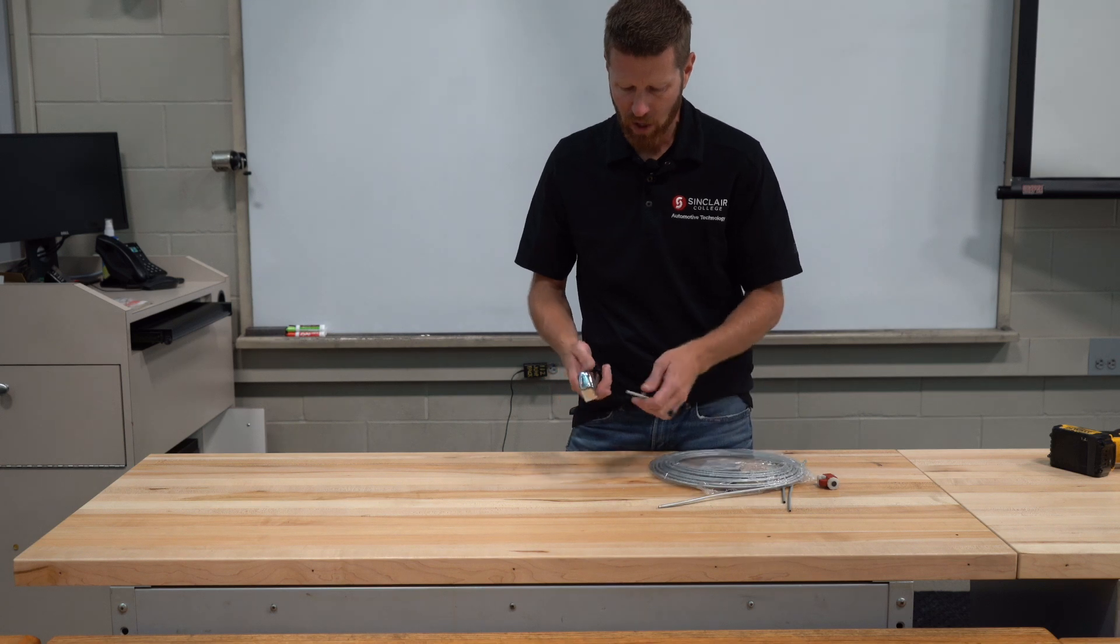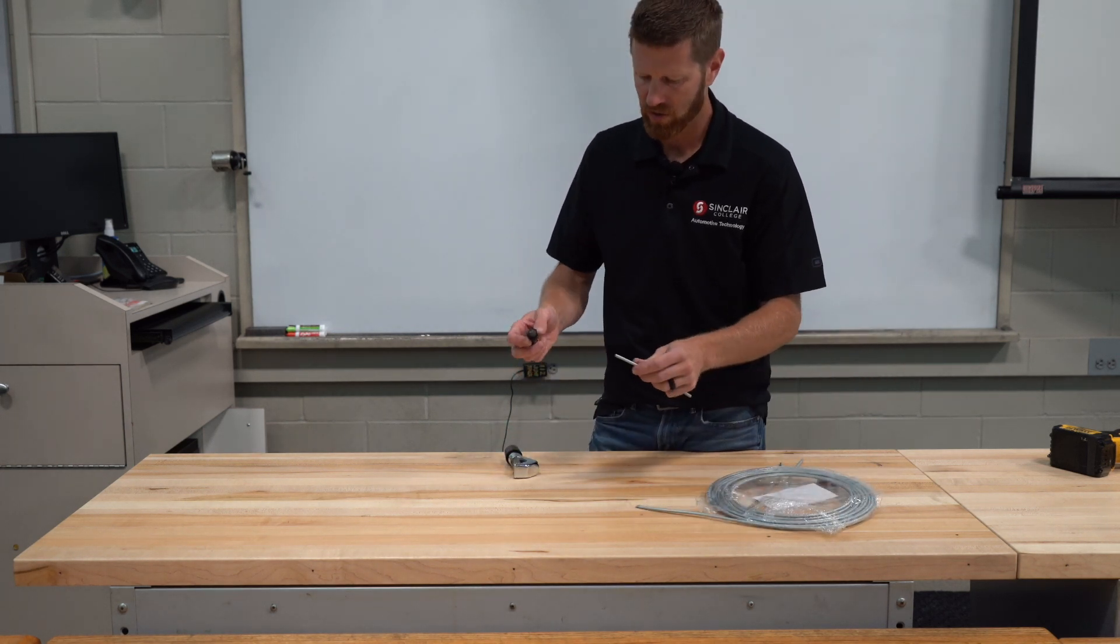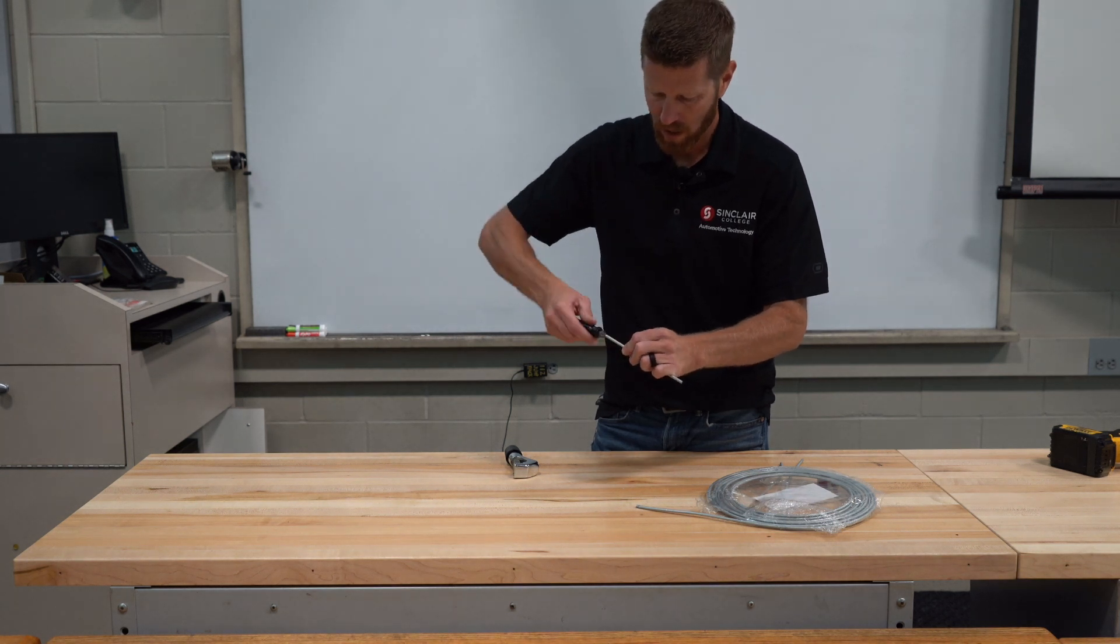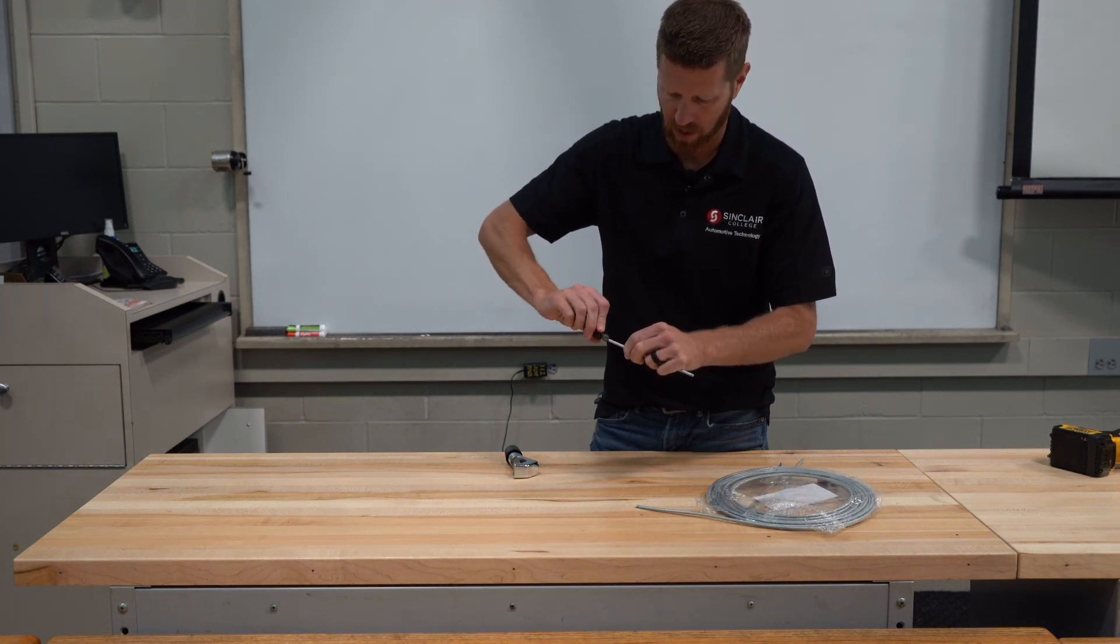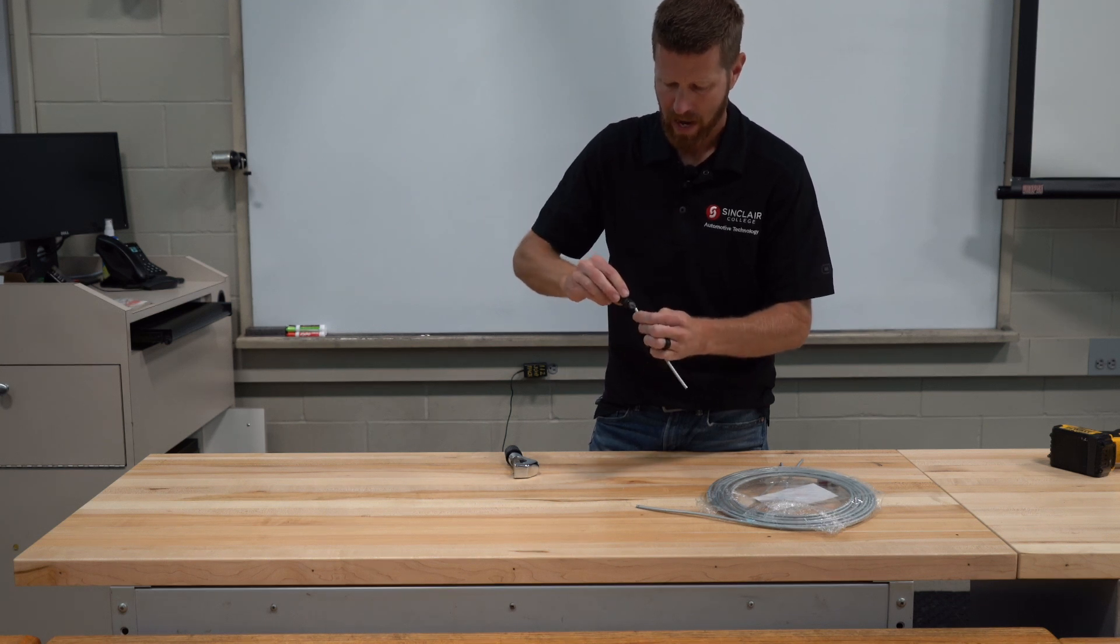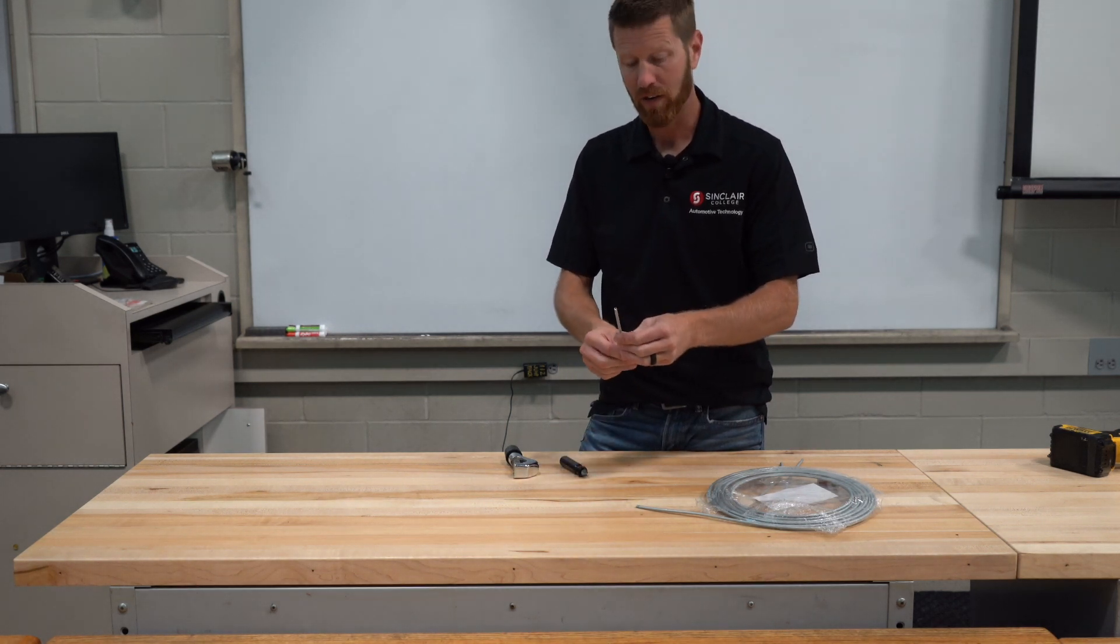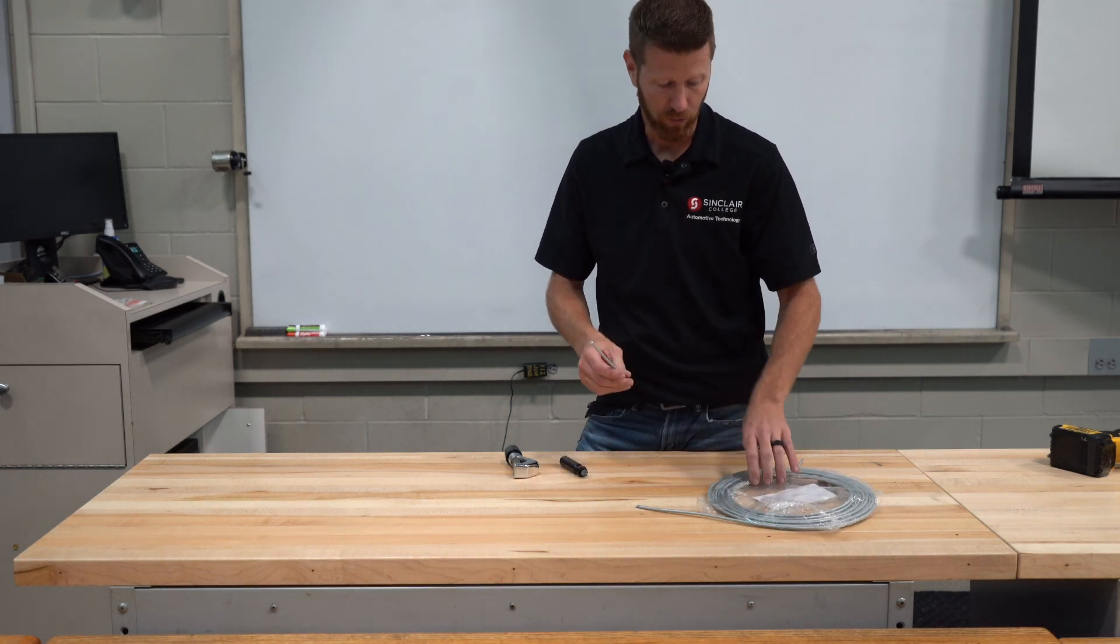Okay then once you get done with that you need to ream the inside of the brake line. So I just have a standard reaming tool right here so we're going to take this and just kind of ream this out. We want to make sure that this is ready for the forming die for whatever flaring tool that we are going to use.